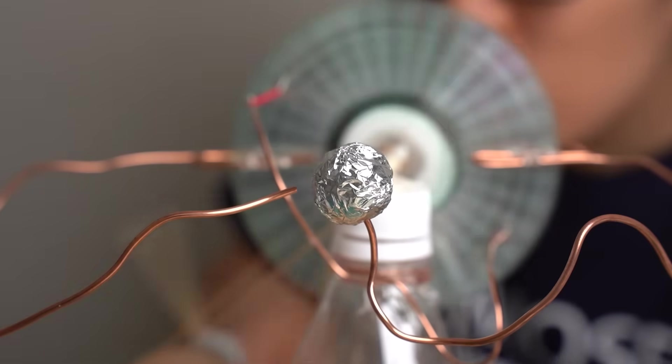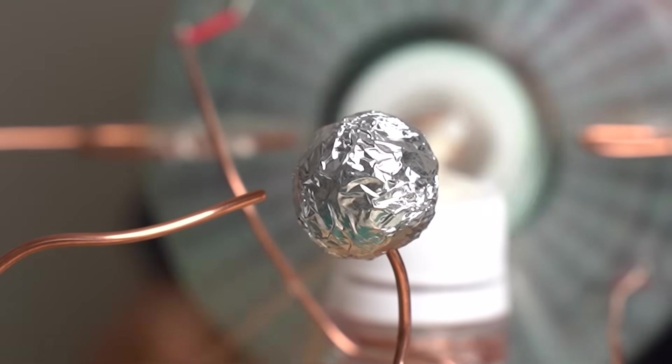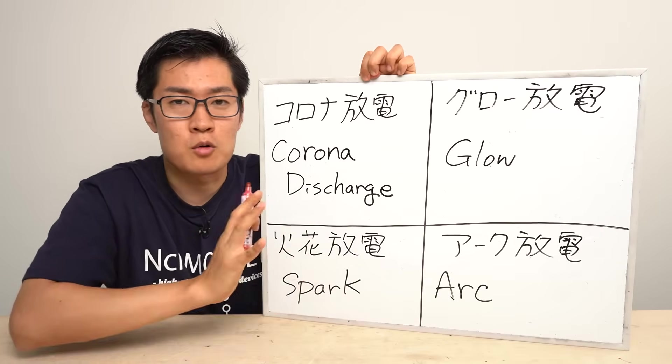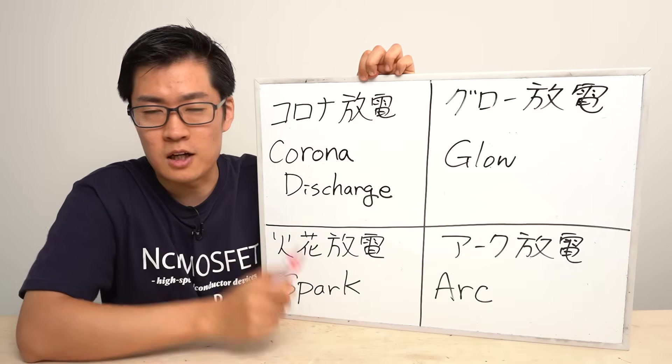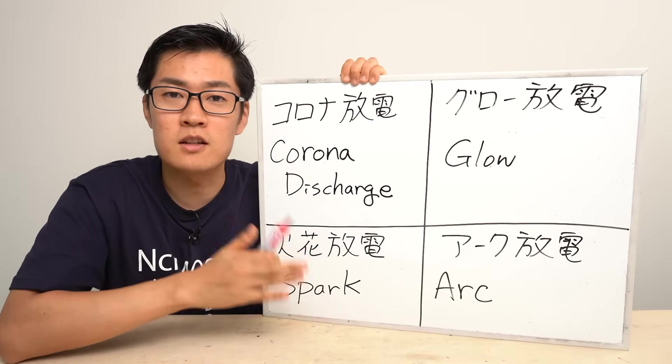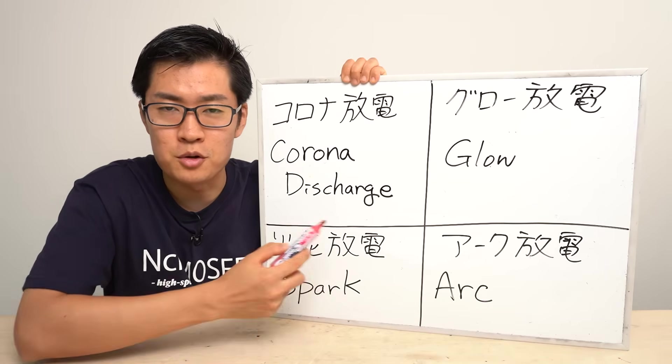The discharge distance of the device I made in the previous video was only 3 to 4 millimeters. But this time I will aim for a longer discharge distance using this book as a reference. The target distance is 20 centimeters. In the first place, what is discharging? Here it doesn't mean the phenomenon that occurs when you discharge a battery. It refers to the phenomenon where high voltage is applied to cause the dielectric breakdown and a current flow.